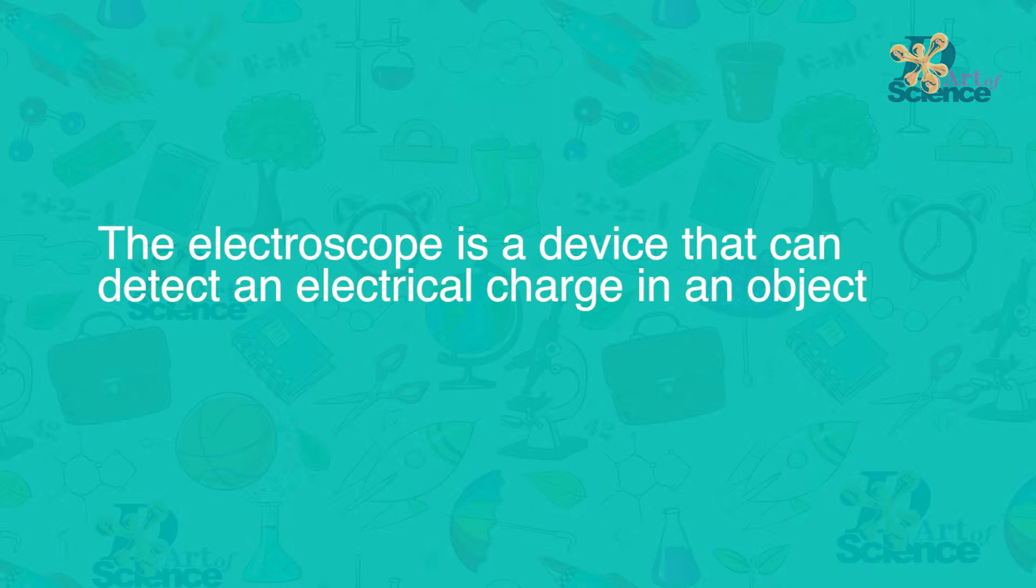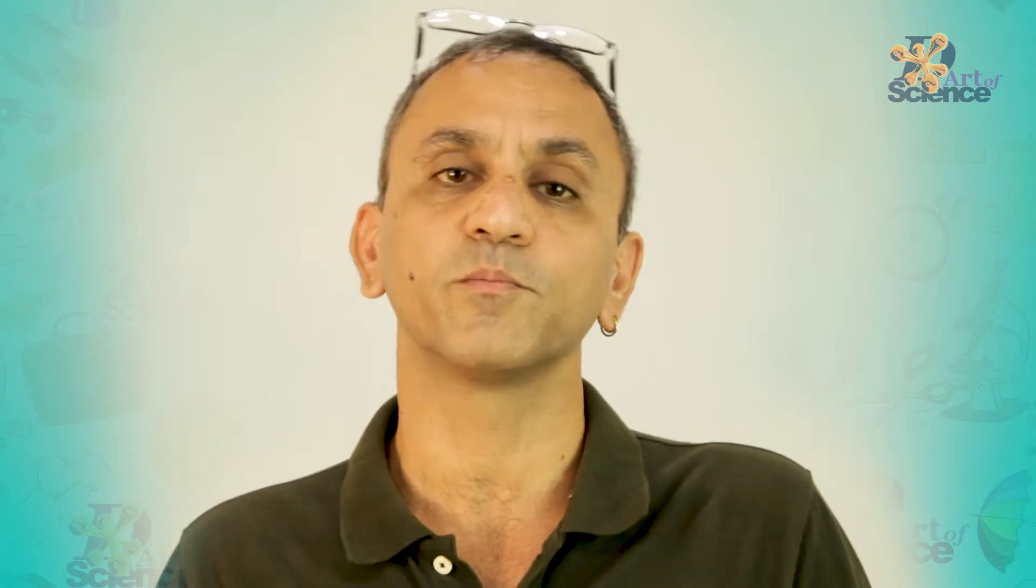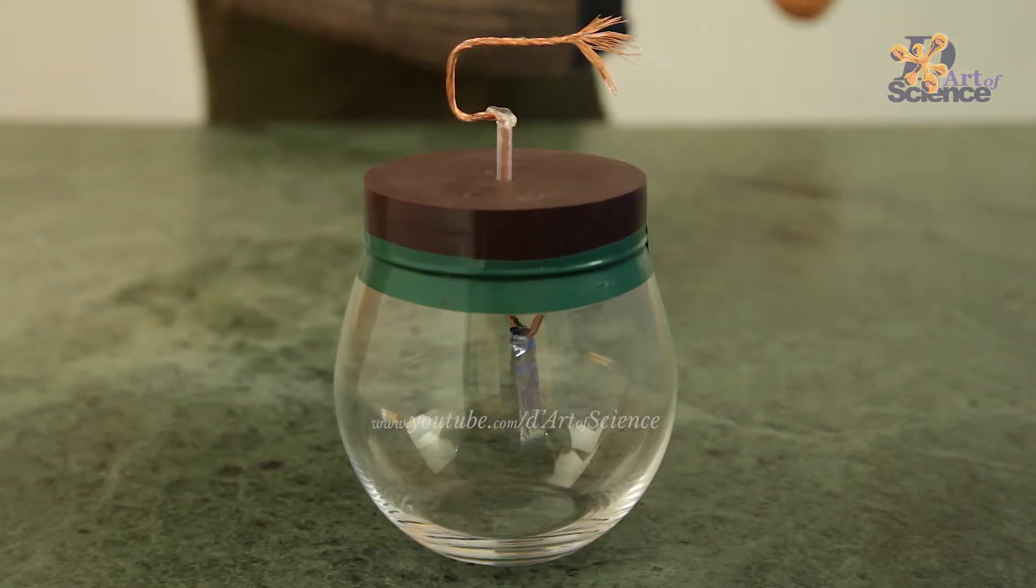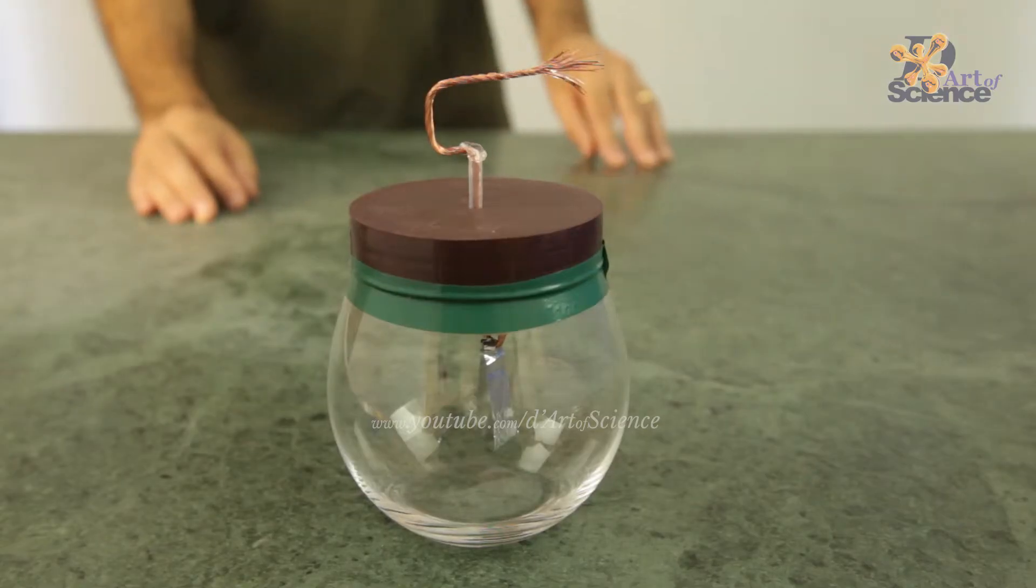The electroscope is a device that can detect an electric charge in an object. In the TIY project for the lesson I will show you how to make a simpler electroscope. But this is also a simple one, so let me quickly just take it apart to show you the different parts.